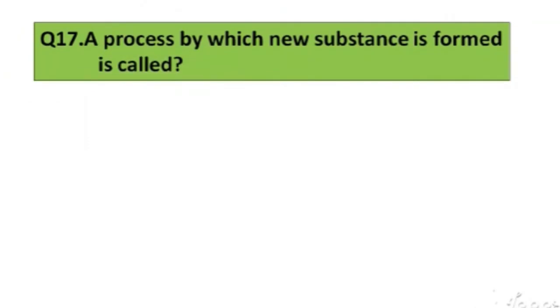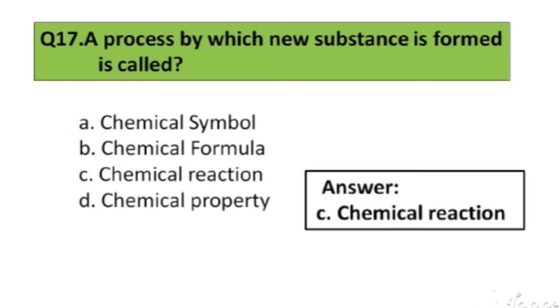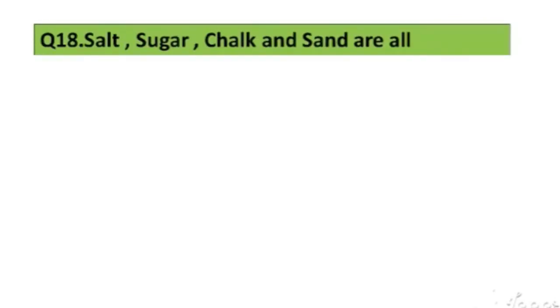Question number 17. A process by which new substance is formed is called: A. Chemical symbol, B. Chemical formula, C. Chemical reaction, D. Chemical property. The right answer is option C, Chemical reaction.